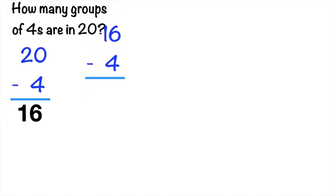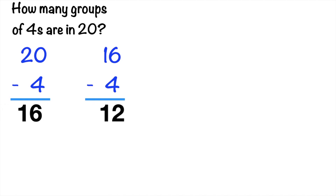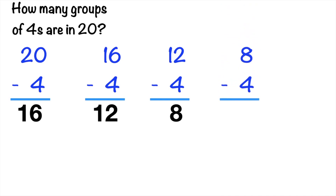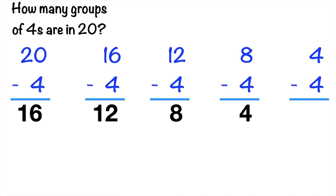16. Next, 16 minus 4 equals? That's correct! It's 12. Then, 12 minus 4 equals? Good job! It's 8. Then, 8 minus 4 equals? Fantastic! It's 4. How about 4 minus 4? It is equal to? 0.